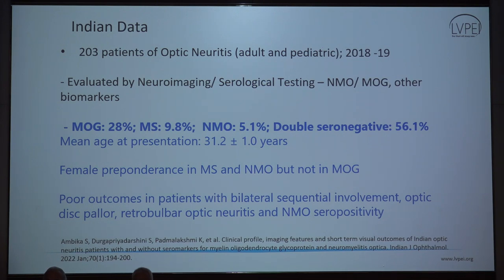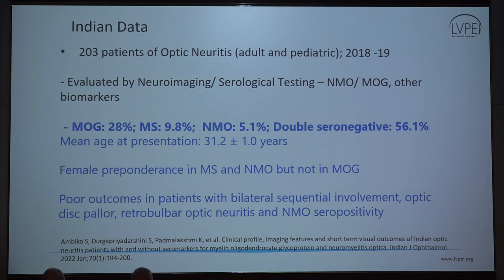What about Indian data? This is a very good study from the SN group this year. They screened 203 patients of optic neuritis between 2018 and 2019, worked up with neuroimaging and serological testing. MOG was the most common final etiology, followed by multiple sclerosis in 1 out of 10, and NMO was about 5%. Importantly, despite extensive workup, nearly half were double-seronegative for NMO and MOG and did not have MS either. The study also showed female preponderance in MS and NMO, but not in MOG.